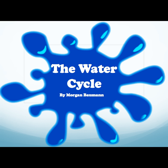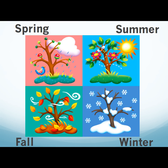The Water Cycle by Morgan Baumann. In Michigan, we see many different kinds of weather all year long: Spring, Summer, Fall, and Winter.